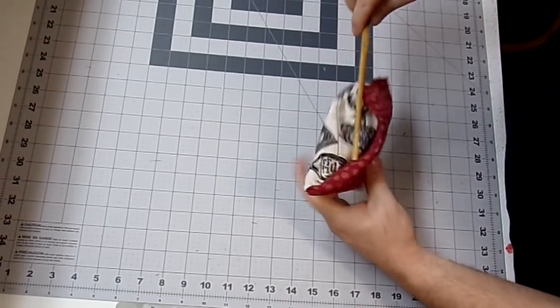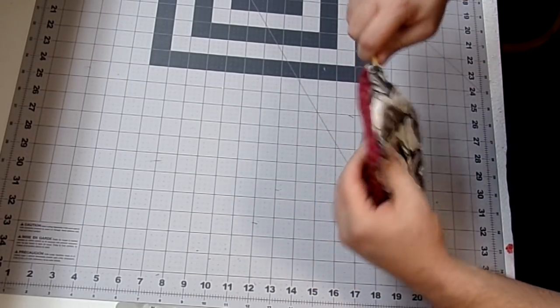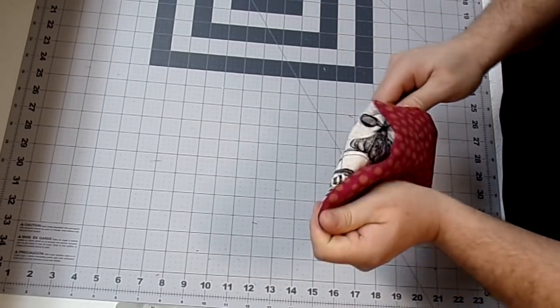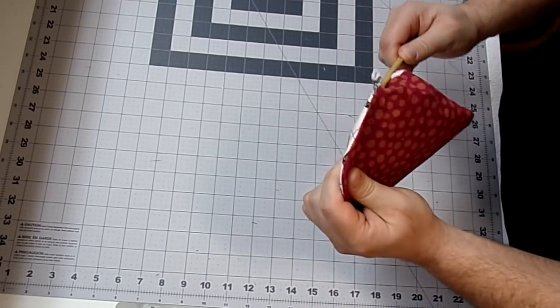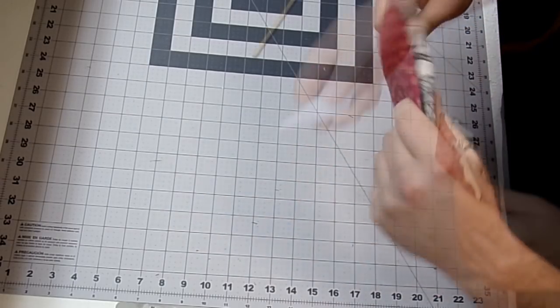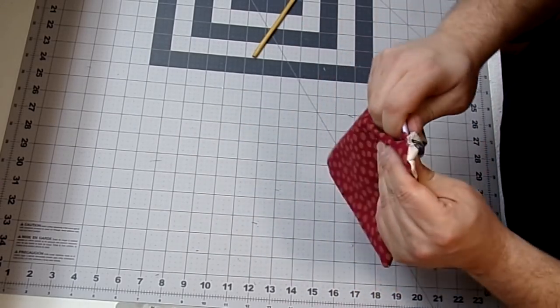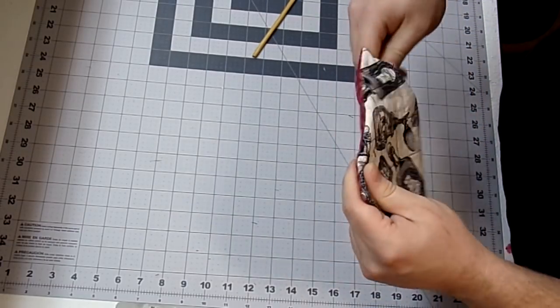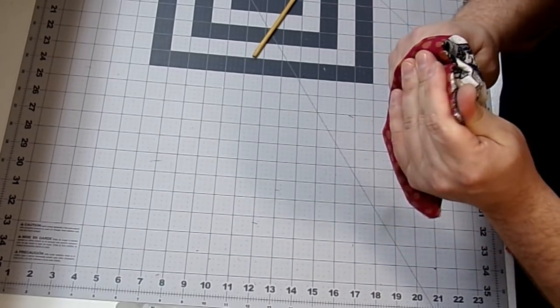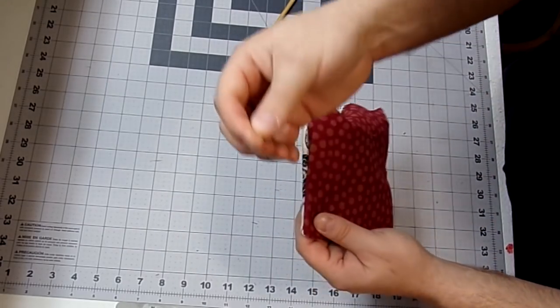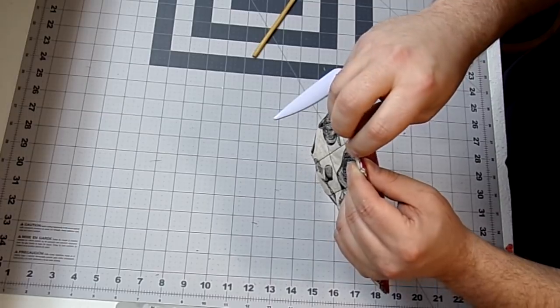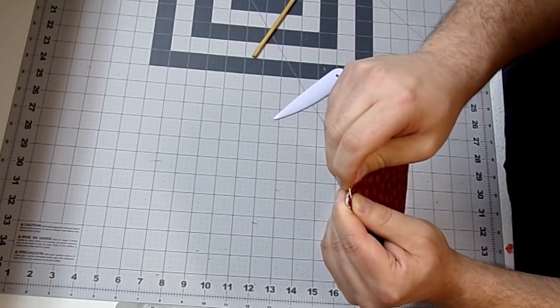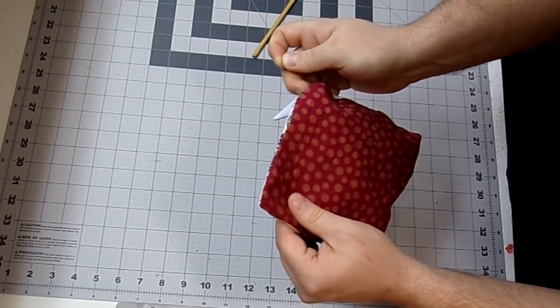Now using a chopstick or anything like that, I'm going to make sure that my seams are nice and smooth and that my corners are poked out. And now with my bone folder, I'm just going to make sure these corners are nice and sharp. And if you don't have a bone folder, you can always just take a pin, stick it in that corner and kind of gently pull it out. That works well also.